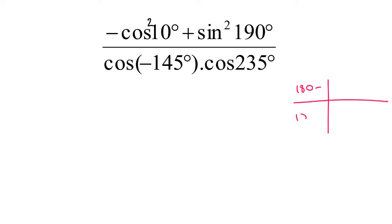So we know this is 180 minus, 180 plus, 360 minus. And so let's start with sin squared of 190. So sin squared of 190, you can think of that as sin of 190, and then that is squared. And so the 190 is in this quadrant. And so you can write it as sin of 180 plus 10.